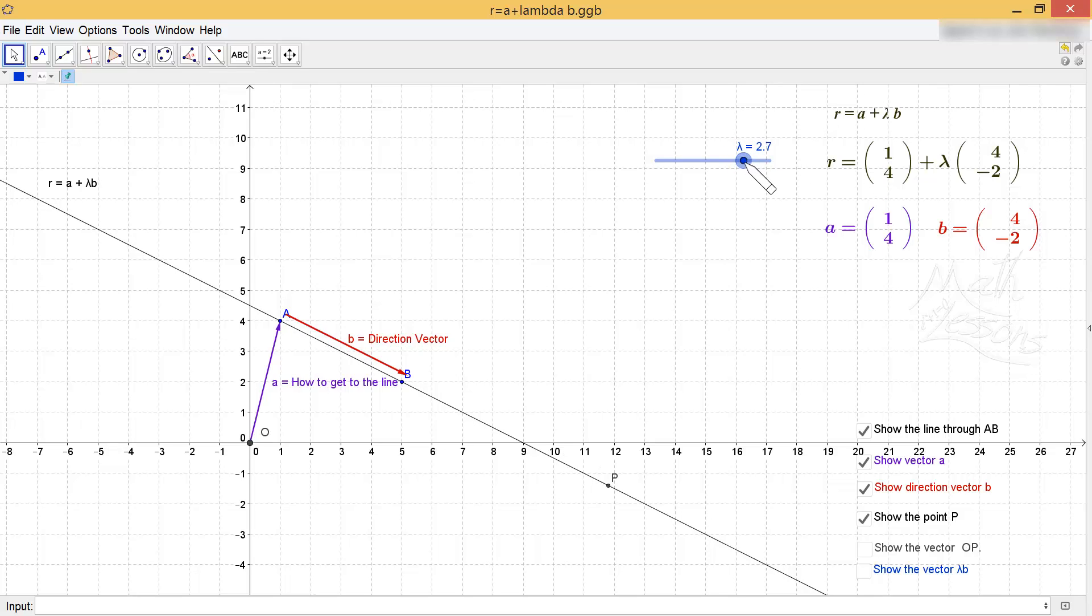And then if I make it minus one lot, then it's exactly the same distance the other side of A from B.